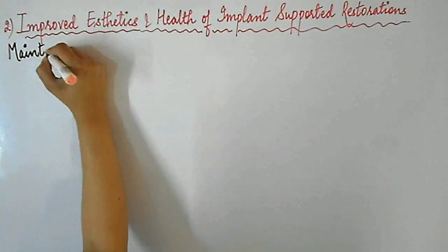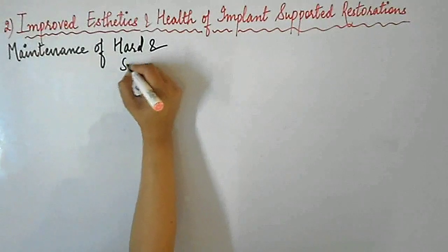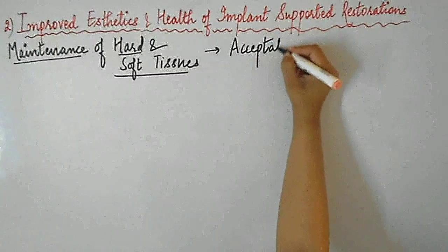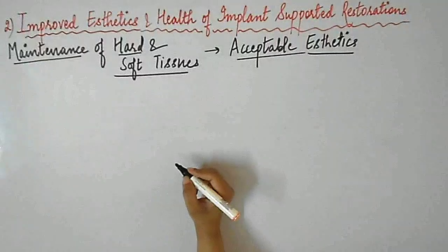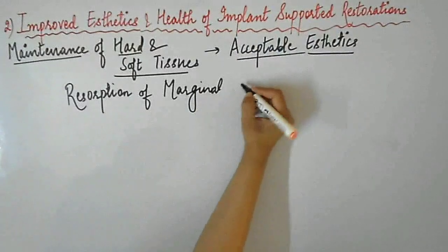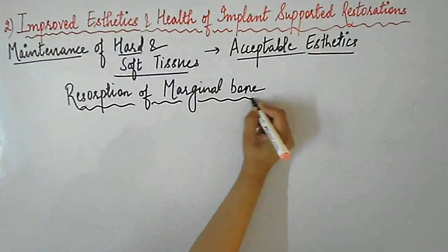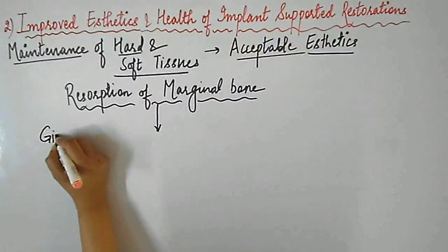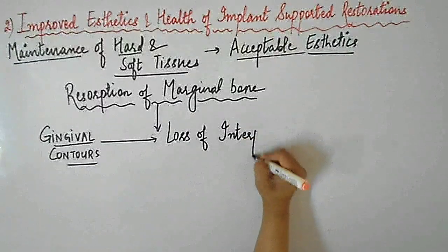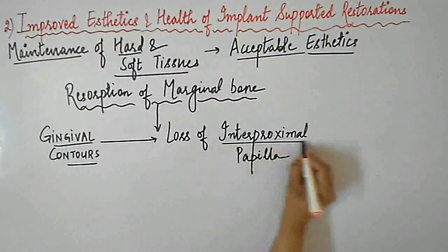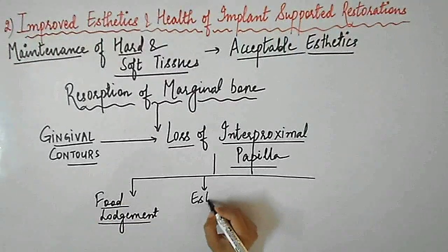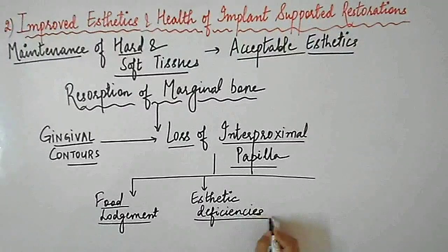Platform switching also provides improved aesthetics and health of implant-supported restorations. Maintenance of hard and soft tissues around dental implants is of prime concern in order to achieve acceptable aesthetics. The position of crestal bone greatly influences the position of soft tissues, meaning resorption of marginal bone adversely affects gingival contours, resulting in loss of interproximal papilla, which may lead to food lodgement, aesthetic deficiencies, or even phonetic problems.